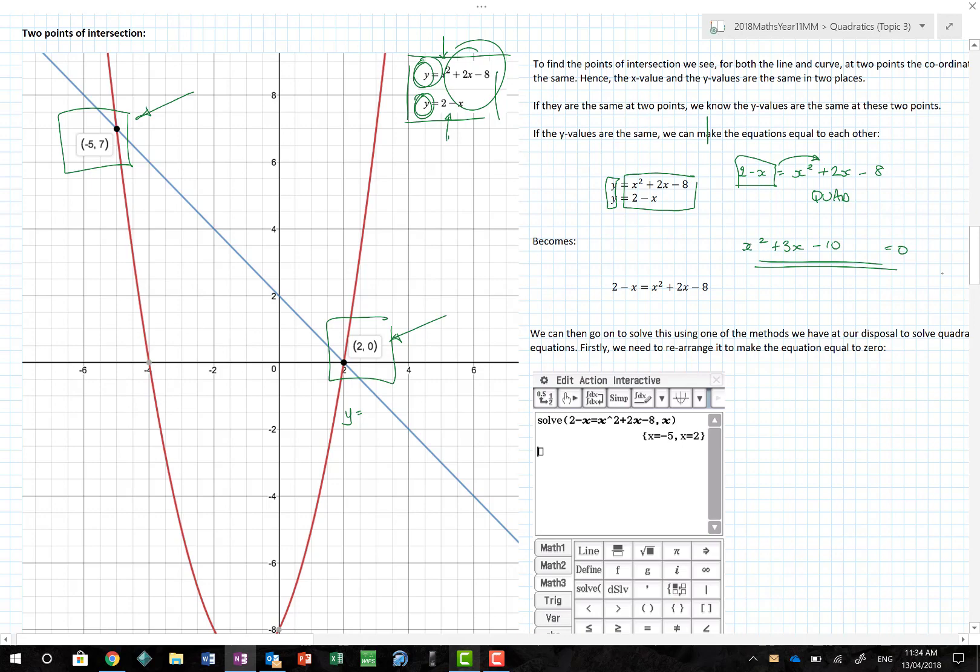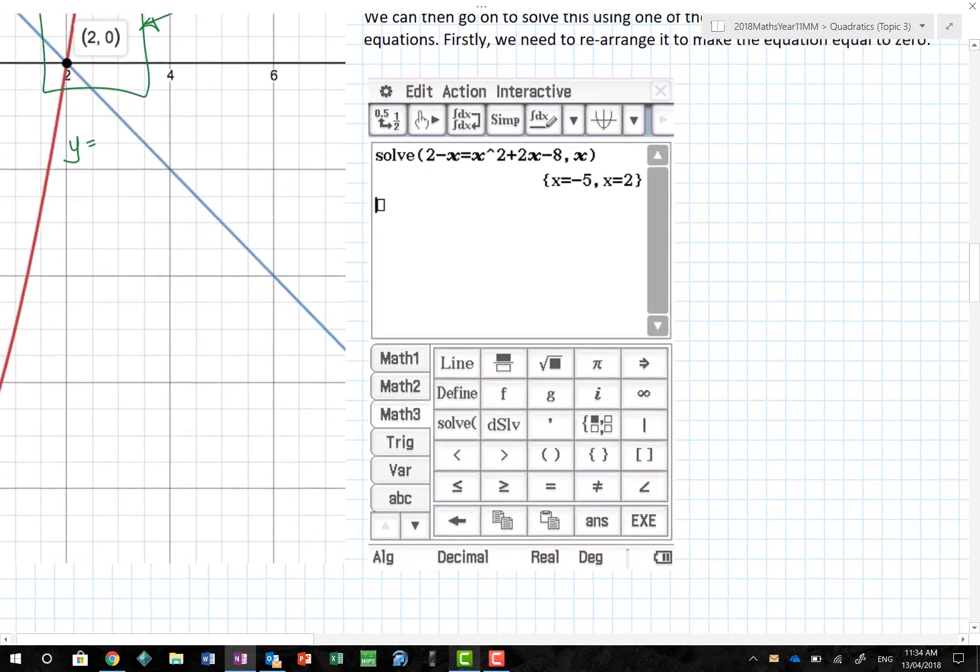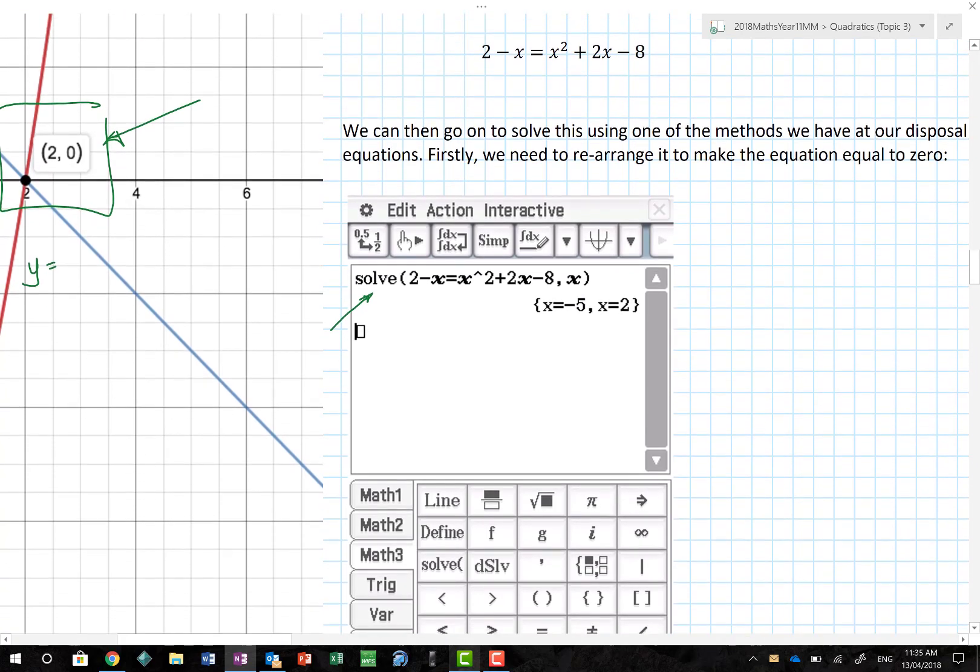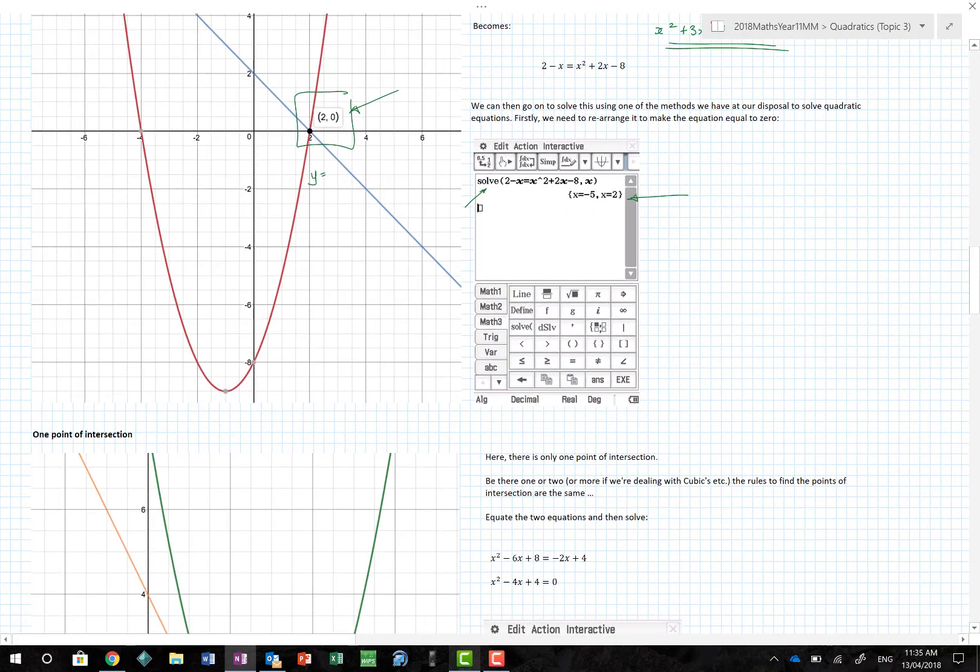This is a CAS course. Why don't we just use our CAS calculator? Those of you who are Casio Classpad users, this is what you would do, but the same idea is very true for the TI Inspire. Put solve in. It was 2 minus x equals x squared plus 2x minus 8, comma x, and lo and behold, outcome my x values of minus 5 and 2. That's the end of my question, isn't it? No.